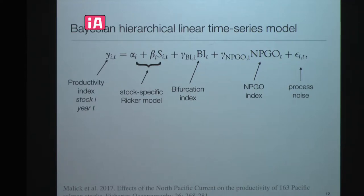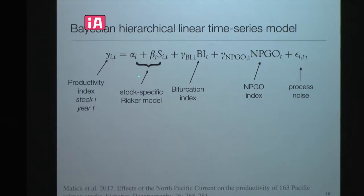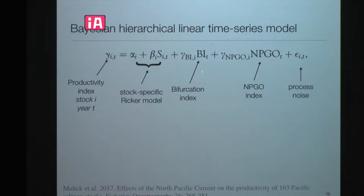This is the only equation I put in here — my original talk would have been full of them. This is the general model we use: a productivity index for each stock and each year, modeled as a stock-specific Ricker model with a constant productivity and a density-dependent beta coefficient — normally negative, so as spawning stock gets larger, productivity goes down. Then there's the bifurcation index, the North Pacific Gyre Oscillation index, and a noise term. We looked at some autocorrelation in that term and various types of models. The idea was to see how these coefficients on the bifurcation index and NPGO varied from zero, as well as over space.